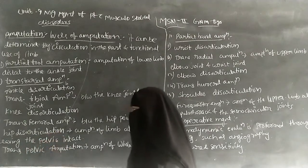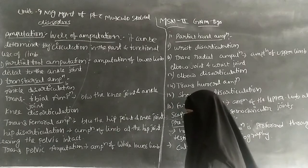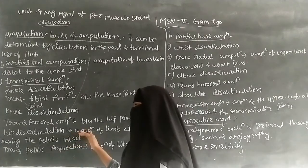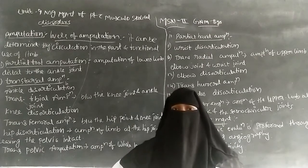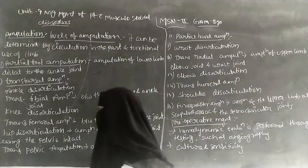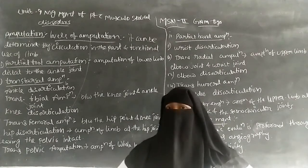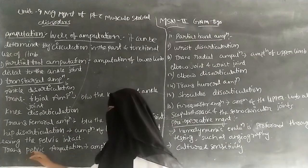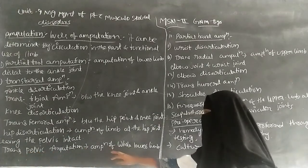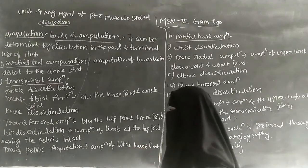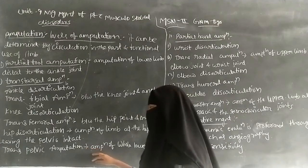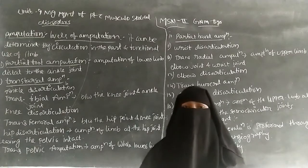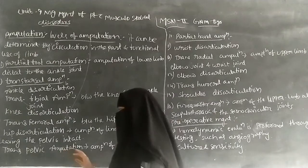Next is hip disarticulation, which means amputation of the limb at the hip joint. The pelvis remains intact, and up to the hip joint the limb has to be removed. After that is trans-pelvic amputation, where half of the pelvis and the whole lower limb has to be removed.